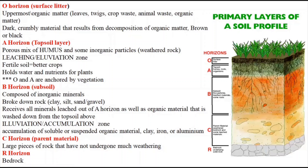The dark color of the O horizon is mainly because of the presence of organic material. This dark brown color comes from fallen trees and other organic matter that become part of the top surface. Number two is the A horizon. This layer is also rich in organic matter and is known as the humus layer.